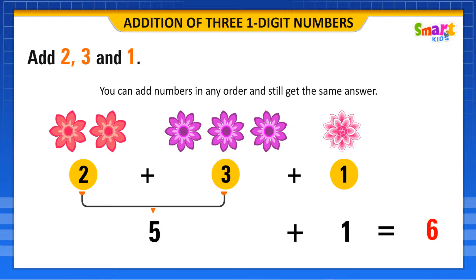In another way, first we add the second and third numbers, 3 and 1. Thus, 3 plus 1 is equal to 4.